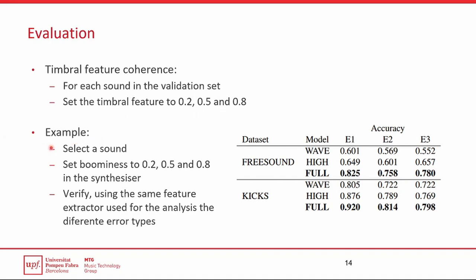As an example, we would select a sound from the validation set, we would set the boominess to 0.2, 0.5, and 0.8 in the synthesizer and then we verified, using the same feature extractor we used for the analysis, the different error types.